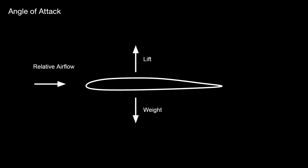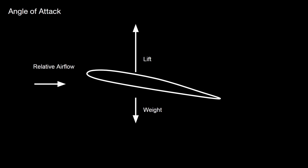If you pull back on the control column or pull back on the stick, you'll increase the angle of attack. The angle of attack is the angle the wing presents to the relative airflow. So the cord line is here, the relative airflow is here - this angle here is the angle of attack - and as you increase the angle of attack you increase the lift.